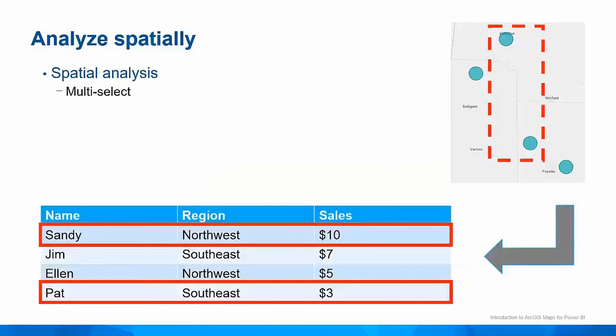ArcGIS maps allow you to perform spatial selections to analyze your data in a new way — analyze your data by where they are or what they're in proximity to. Multi-select allows you to draw a box on the map and select the locations inside the box. The records don't have to have any attributes in common, yet they can be part of the same spatial selection due to their proximity to each other.